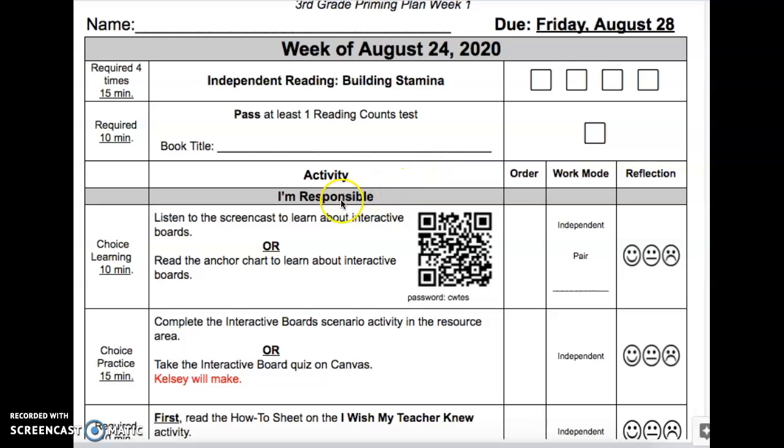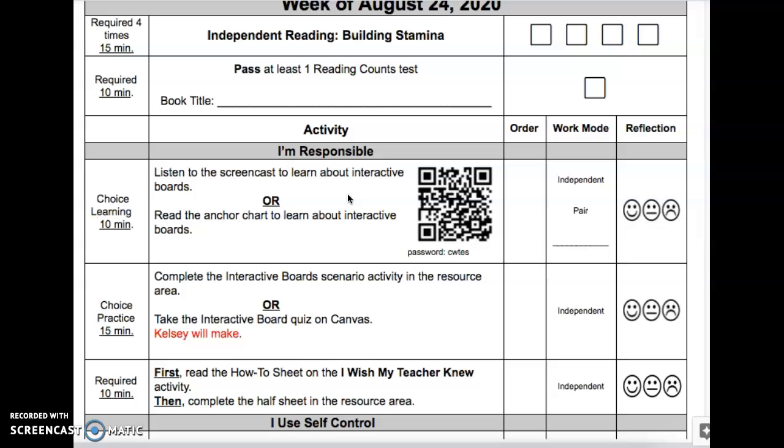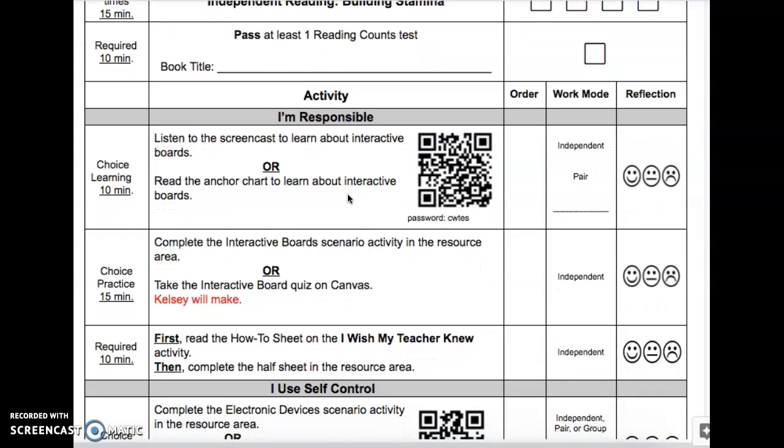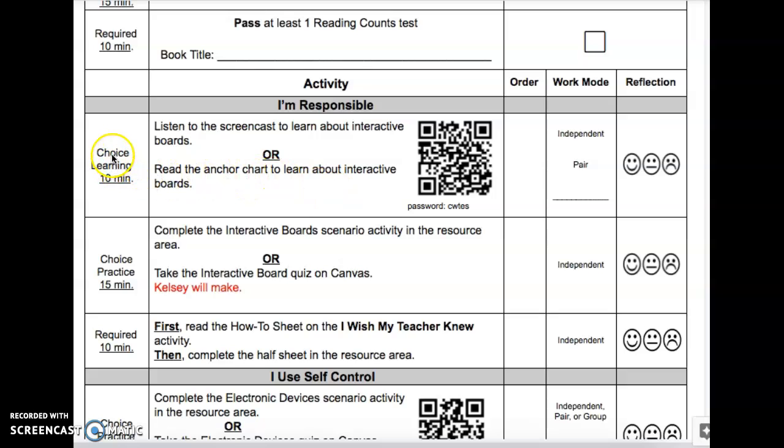So now we're moving down to the I'm Responsible section of the activity list. This should look very similar to second grade, but it may be a little different since we haven't done it in a while. The first thing is a choice learning. 10 minutes again for you to set your timer. You have two options. You need to circle which one that you would like to complete. You can listen to the screencast to learn about the interactive boards in the classroom.